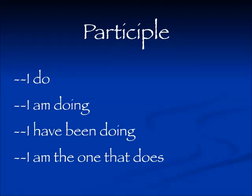In English we have two different ideas: I do something, which means I do it every day, or I am doing something, which means I'm doing it right now. In Hebrew there's really only one form that covers both these ideas. So when we see the participle form, either it means I do this or I am doing this. It can also mean I have been doing this, and it also refers to the person who is doing the action, and we'll have some examples of that as we go along.